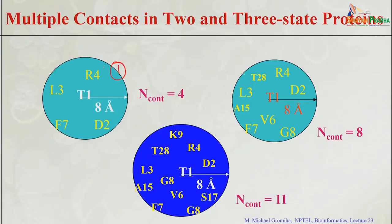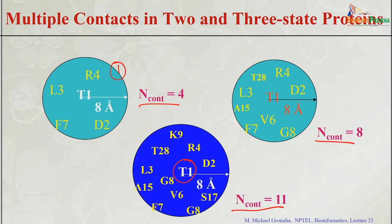For example, consider how many contacts a residue has: here only 4 contacts, this one has 8 contacts, and this one has 11 contacts — this is for residue T1. If in one protein only 5 residues have multiple contacts, and another protein has 20 residues with multiple contacts, which will fold faster? The one with only 5 residues will fold fast, because fewer residues need to acquire more contacts.